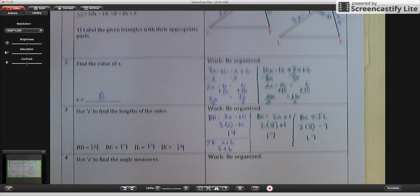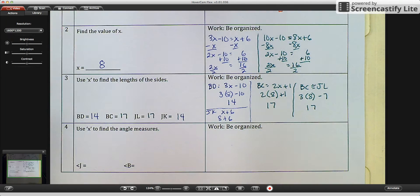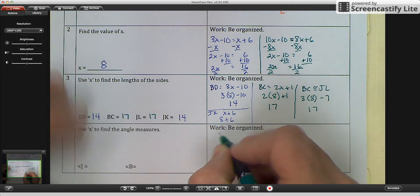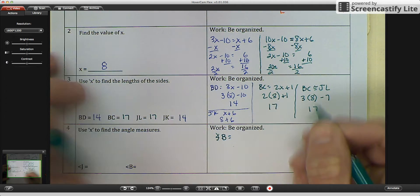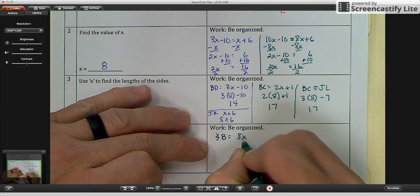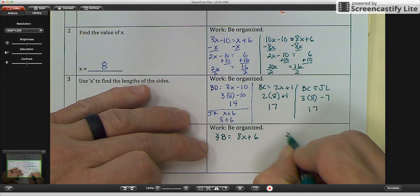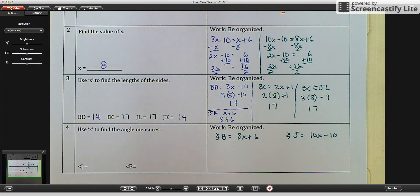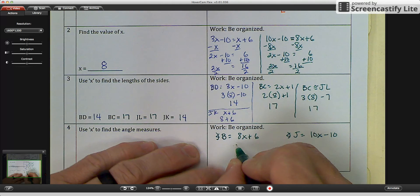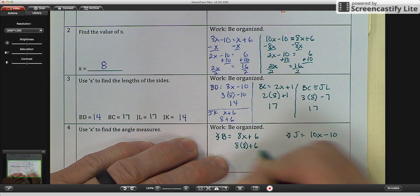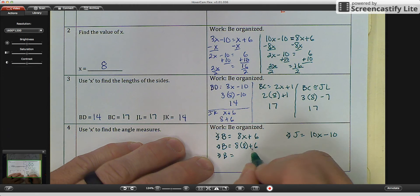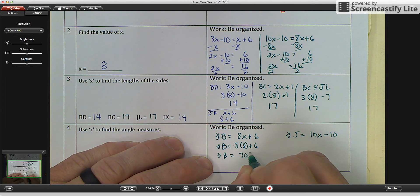The last part says use X to find your angle measures. Angle J and angle B. Well, if you look back up top at the paper, you see that angle B is equal to 8X plus 6. And angle J is equal to 10X minus 10. And then, when we substitute our values in, you go 8 times 8 plus 6. Angle B equals 8 times 8 is 64. Plus 6 would be 70 degrees.